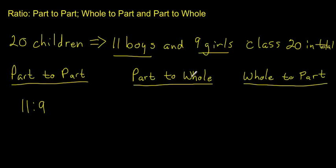In a part-to-whole comparison, we might be looking at just comparing one of these two parts to the whole class. So we might write that as, if we were talking about the boys, we might say 11 to 20, where the 20 is the number of children in the class, and the 11 is the number of boys. So this is a part-to-whole ratio.